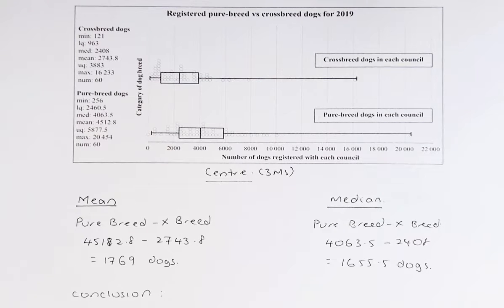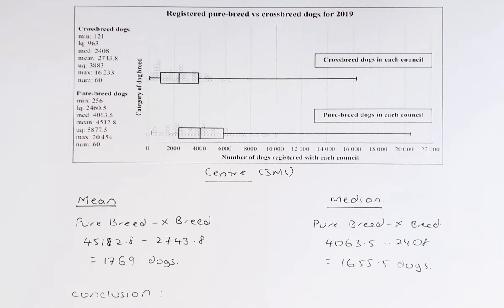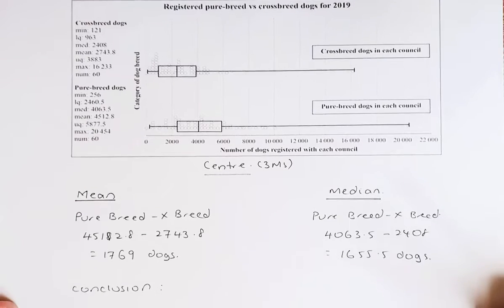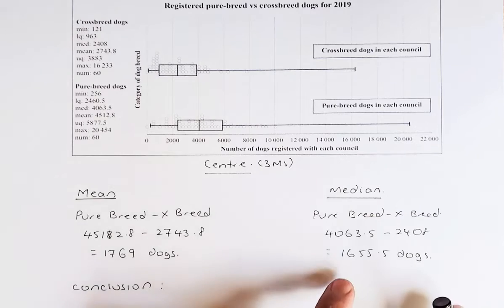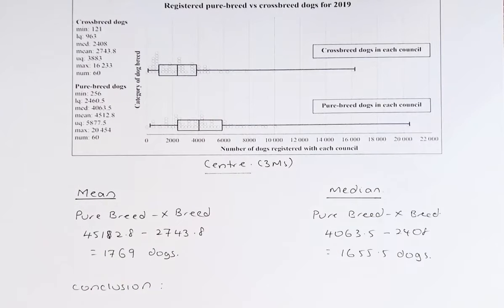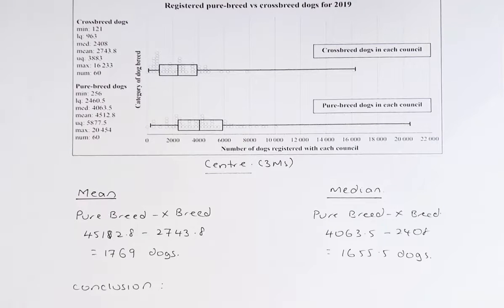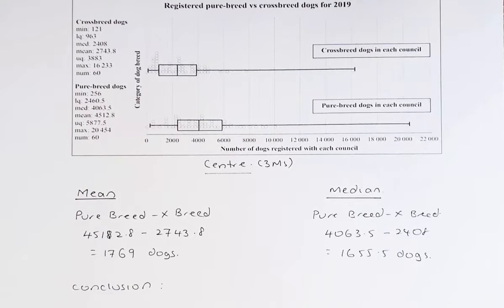If we compare the median, also found on the left-hand side of the graph, the purebred has 4,063.5 while the crossbreed has 2,408, and therefore the median for purebred is bigger by 1,655.5 dogs. Since the purebred has a bigger mean and median, we can confidently conclude that purebred dogs are registered more than crossbreed dogs.